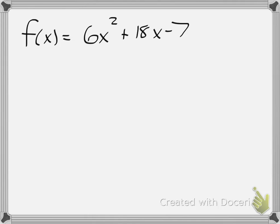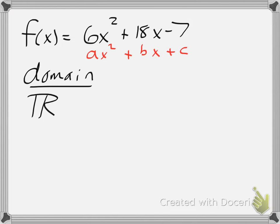To find the domain and range, let's remind ourselves that we are looking at a quadratic function. For starters, the domain of any quadratic function in the form ax squared plus bx plus c, where in this case a is 6, b is 18, and c is negative 7, our domain is automatically all real numbers, expressed with this symbol, or in interval notation from negative infinity to positive infinity.